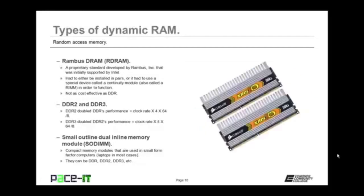DDR2 doubled DDR's performance. The formula for its transfer rate is clock rate times 4 times 64 divided by 8. That was superseded by DDR3, which doubled DDR2's performance and is the current standard. Its formula is clock rate times 8 times 64 divided by 8 — super fast. Soon we're going to see DDR4 and DDR5 being common, but not quite yet.